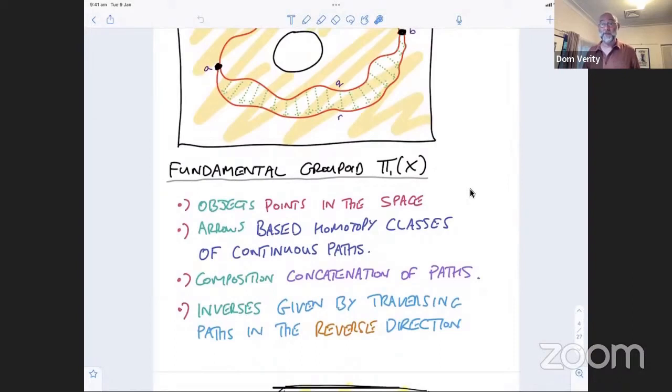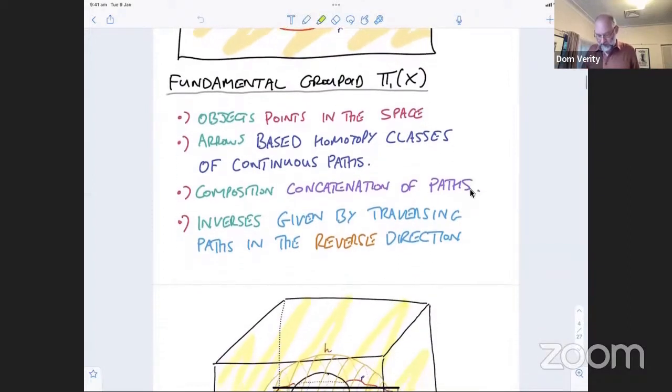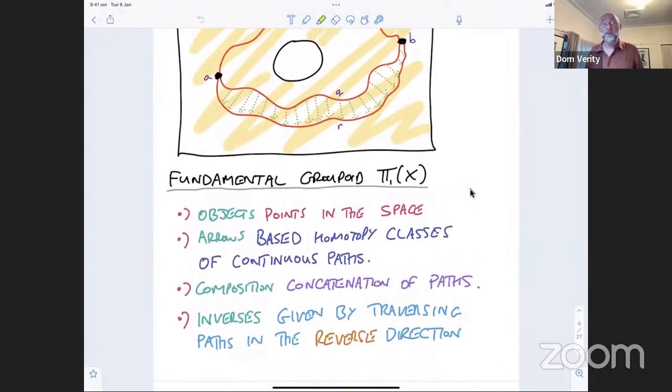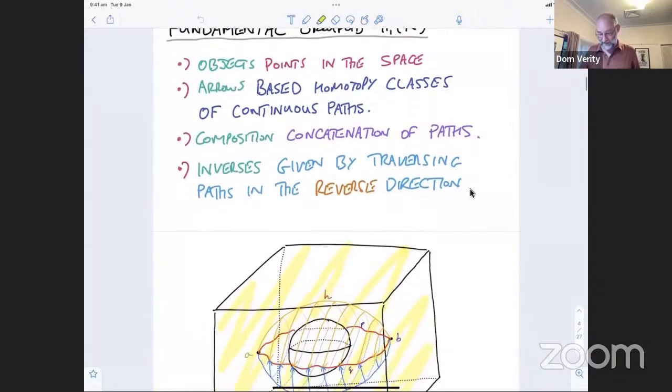So this gives us a category and it's very straightforward. It's something that we do in undergraduate courses very regularly to teach people how to show that this thing is a groupoid. But of course, there are various things that we might want to do to that. There are some problems with this construction from the perspective of understanding the fine structure of this topological space.